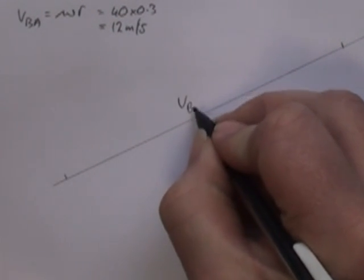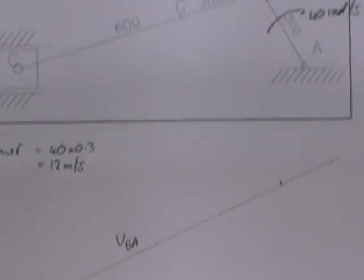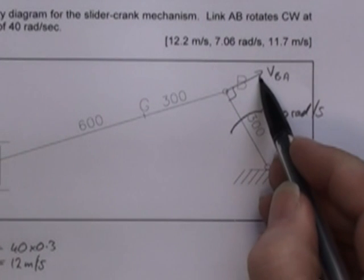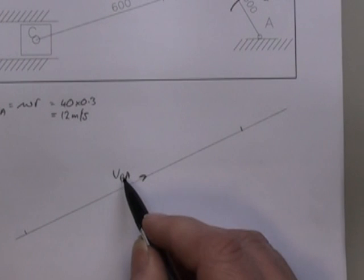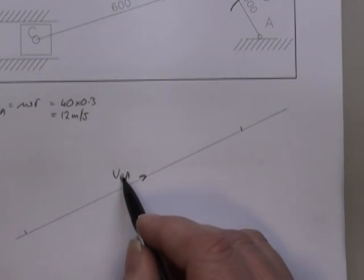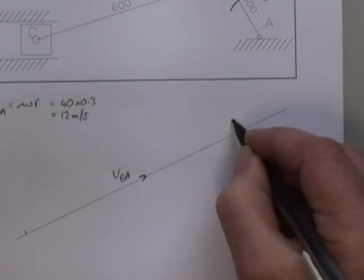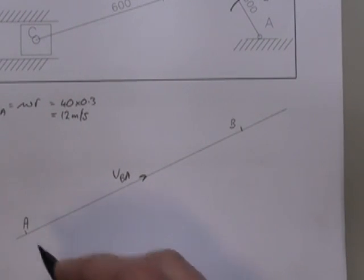So I label this VBA. I know the arrow goes this way. And with all of these things, the arrow points to the first letter. So B must be at this end, and A must be at that end.